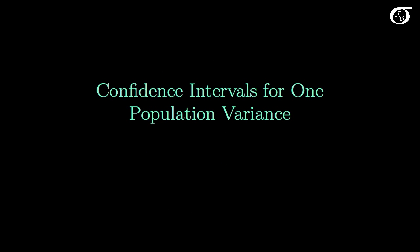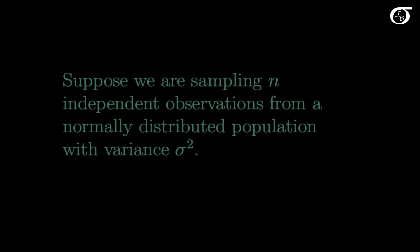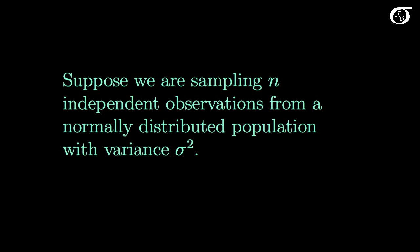Let's look into confidence intervals for one population variance. Suppose we are sampling n independent observations from a normally distributed population with variance sigma squared. Our goal is estimating sigma squared via a point estimate and a confidence interval. We're going to be assuming that we're sampling from a normally distributed population. If we are, these methods work perfectly, but if we are sampling from a distribution that is not normal, these methods can actually work very poorly indeed.